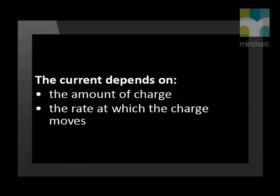An electric current is the rate of flow of charge. There are a few other factors that will affect this flow of charge. The current depends on the amount of charge that moves past a point in a circuit. The current also depends on the time taken, or the rate at which the charge moves past that point. Therefore, we must consider both the amount of charge that moves and the time that it takes to travel through the conductor.